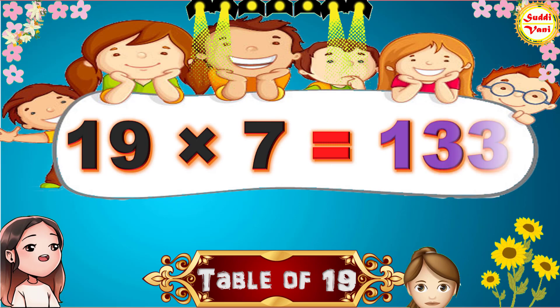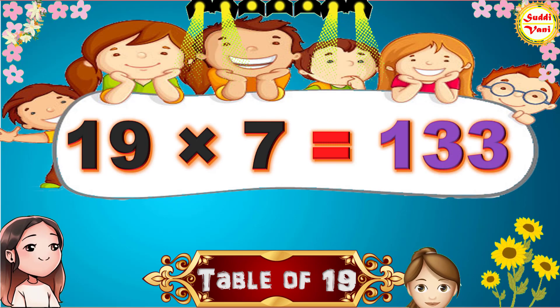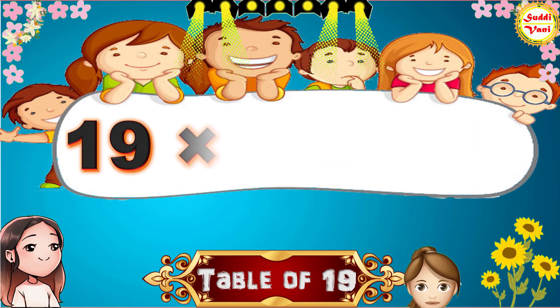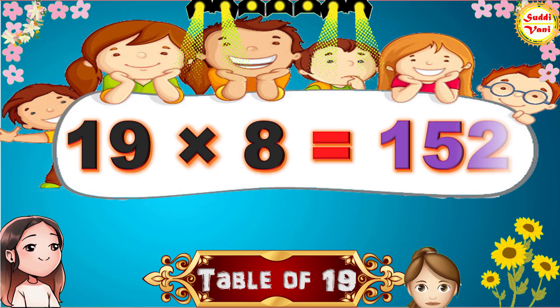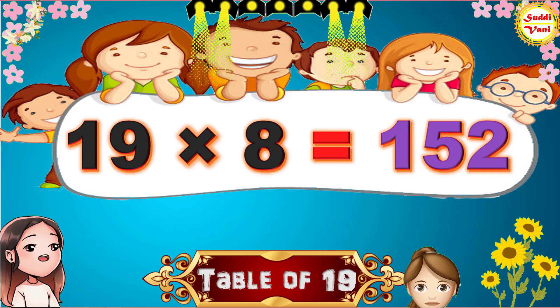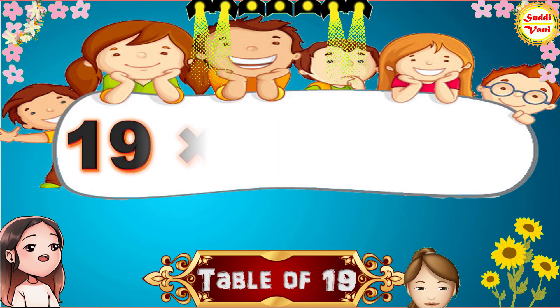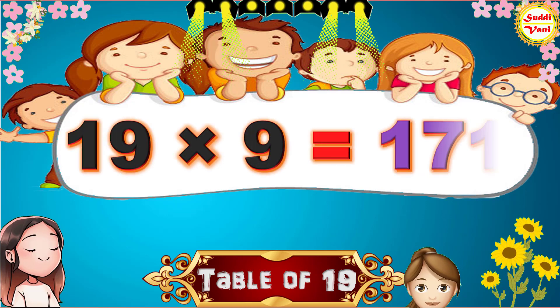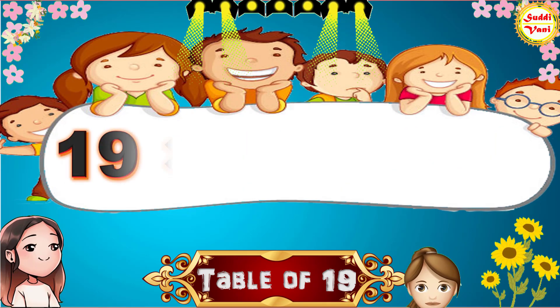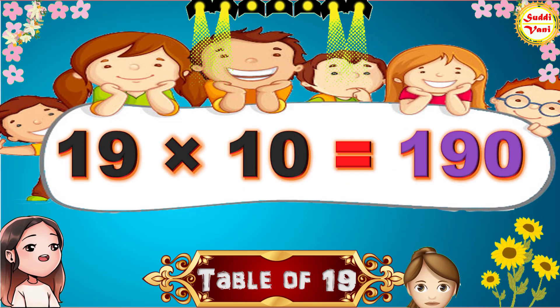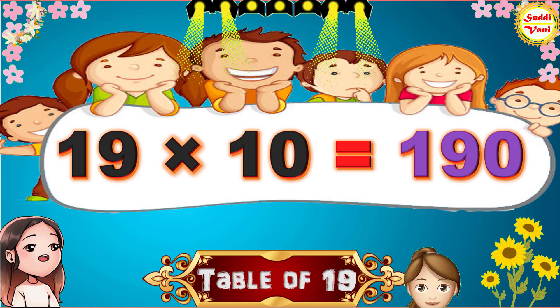19 × 7 = 133, 19 × 8 = 152, 19 × 9 = 171, 19 × 10 = 190.